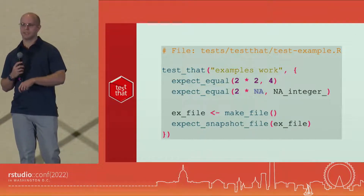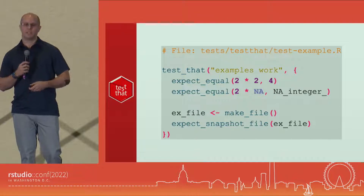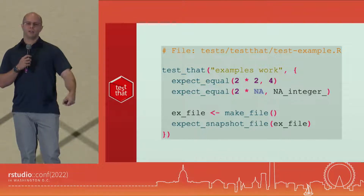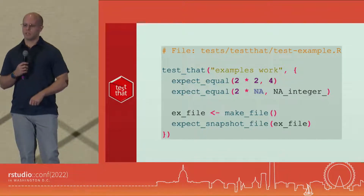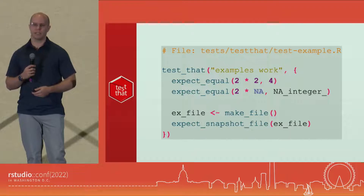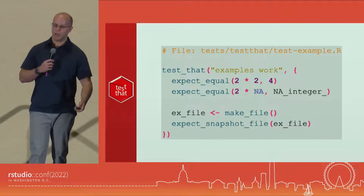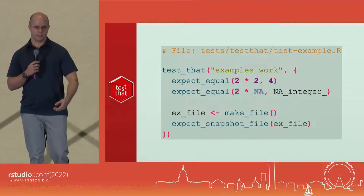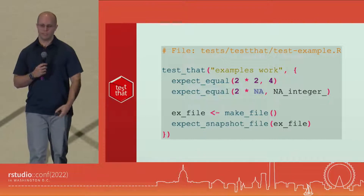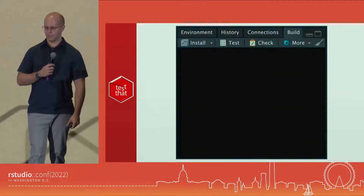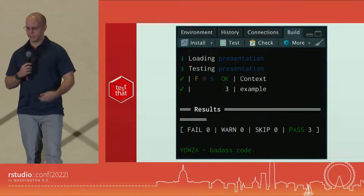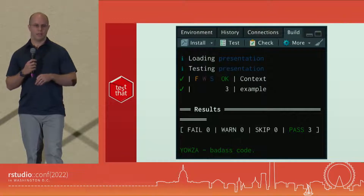New to testthat edition three is snapshot testing. Snapshot testing is where we don't do an expect_equal x to y. We say keep track of this file and just make sure it doesn't change, because that file may contain lots of content that can't be put into code. We can make an example file, use expect_snapshot_file, and it will compare whether the file changed from each run — yes or no — and if it didn't, the test passed.